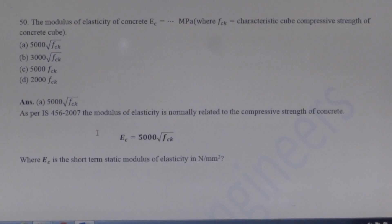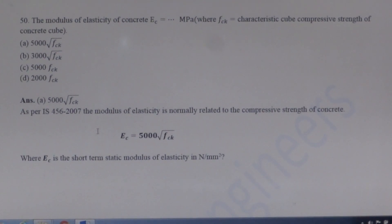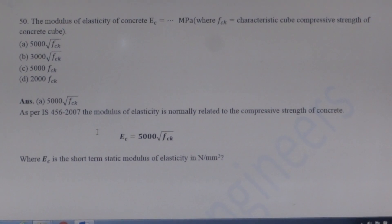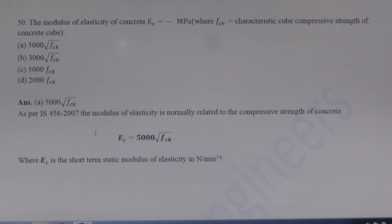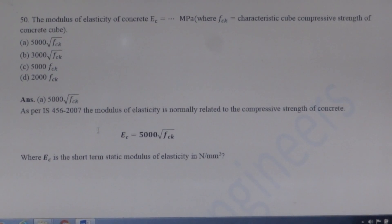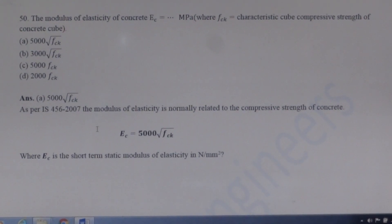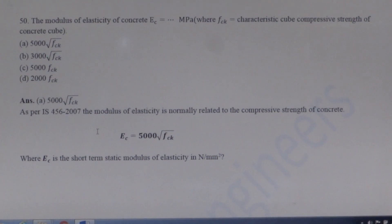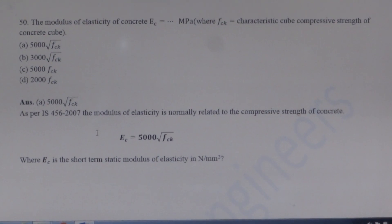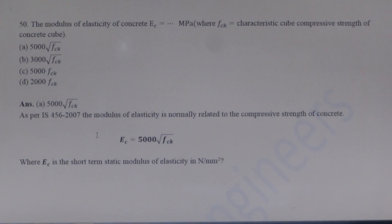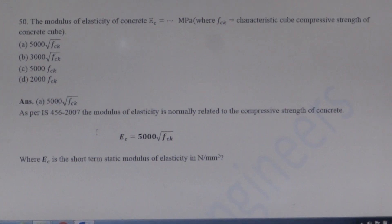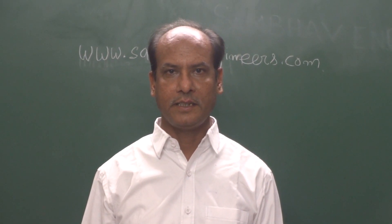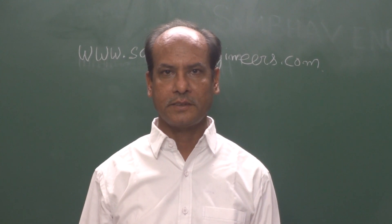Next question: The modulus of elasticity of concrete Ec in MPa — here fck is the characteristic cube compressive strength of concrete. As per IS 456:2000, the modulus of elasticity of concrete is given by Ec = 5000√fck, where both Ec and fck are in N/mm². Thank you for watching the video, please like, share the video, and subscribe to the channel.